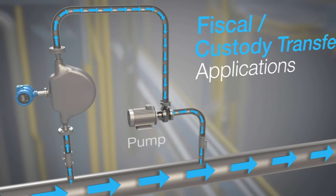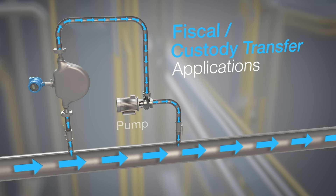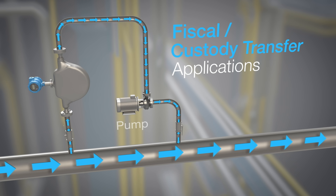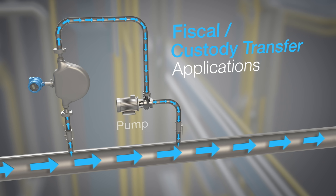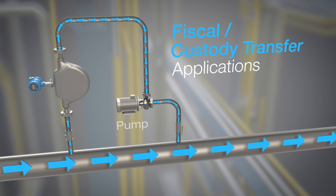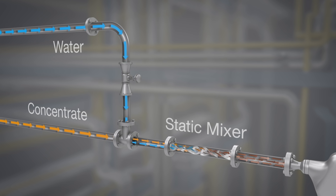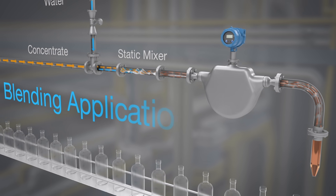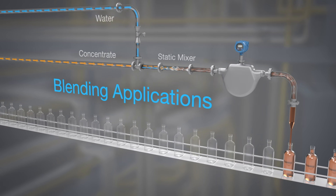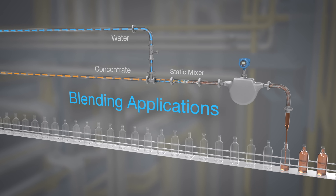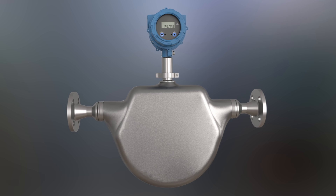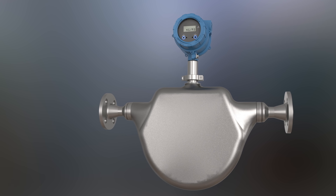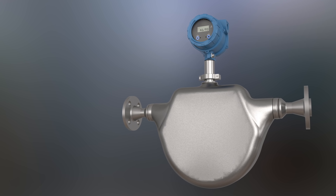Now let's look at some common applications. The Compact Density Meter is the trusted density meter in custody transfer applications, minimizing gain or loss uncertainty with the highest precision. And in blending applications, enabling accurate measurement of alcohol concentration for distilling processes. The Compact Density Meter is the precise and robust online density and concentration meter trusted in the most critical applications.